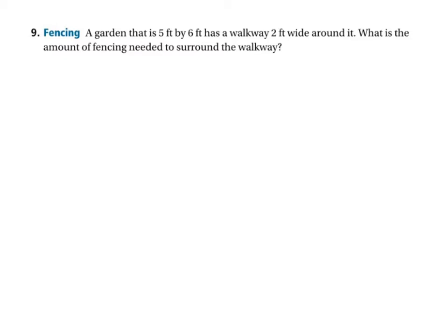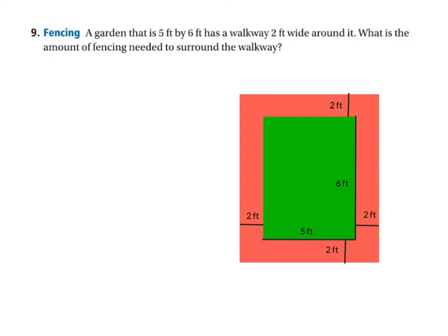Well I've made a sketch of this because this is really the way that you need to start. You should make a sketch that shows you the general idea and here's the general idea. We've got this five foot by six foot garden and then the walkway which I've made in terracotta color, so let's say it's brick laid, it's two feet across.